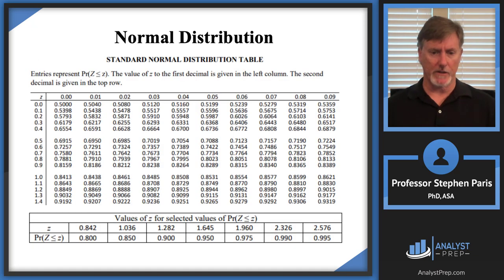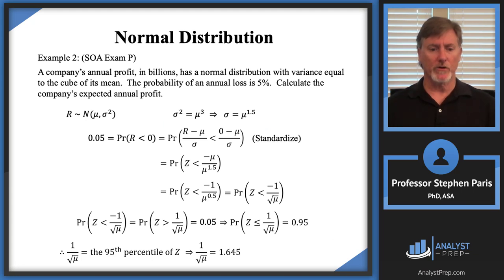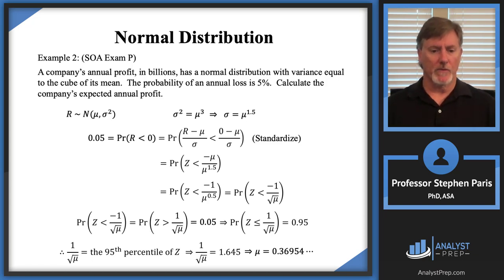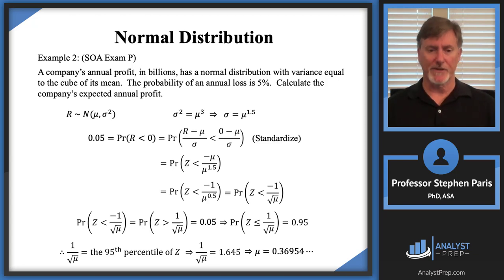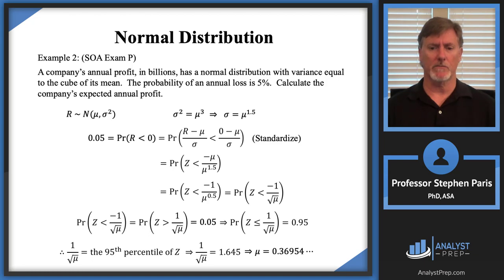Solving 1/√μ = 1.645 for μ gives μ ≈ 0.36954. The company's expected annual profit is approximately 0.36954 billion, or about 369 million dollars.